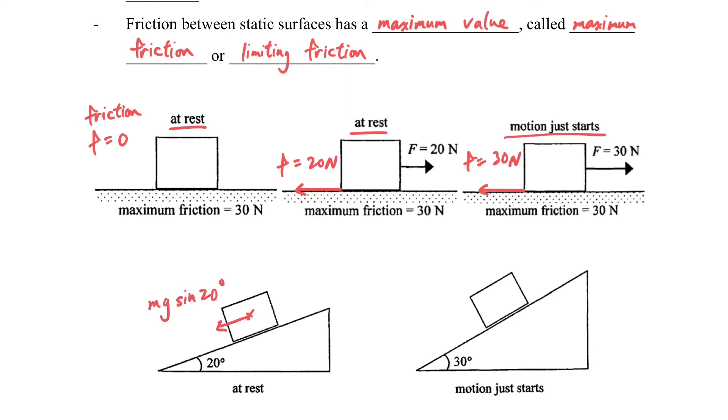For the lower one, when it is on the inclined plane, you can see there is a component of weight pulling it down, so there must be friction on the opposite side to keep it at rest. When the motion just starts, the force required is also the same as the weight component.